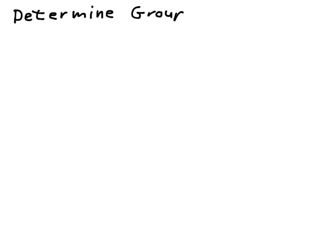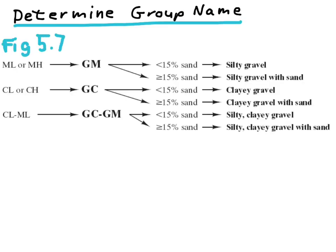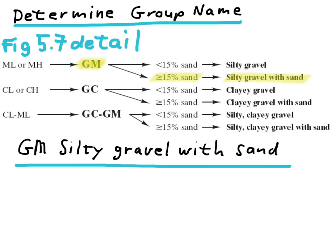Well, we're nearly done now, but we finally need to determine the group name. So, to determine the group name, we have to look in the detail of Figure 5.7 again. We know that we have a GM material. Now, the question is, is it just a silty gravel, or is it a silty gravel with sand? In our case, we have more than 14% sand, so our soil classifies as a silty gravel with sand. And the final classification is GM, silty gravel with sand.